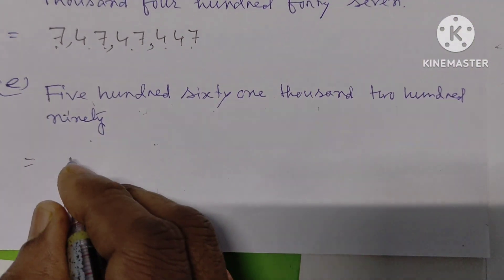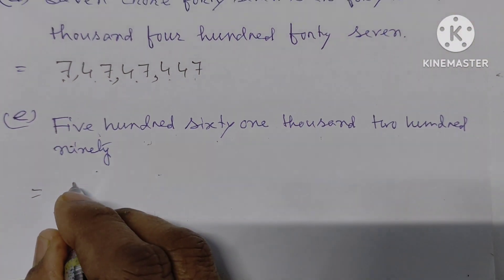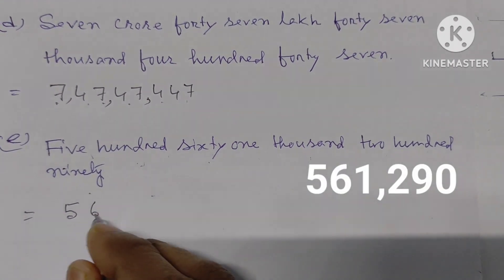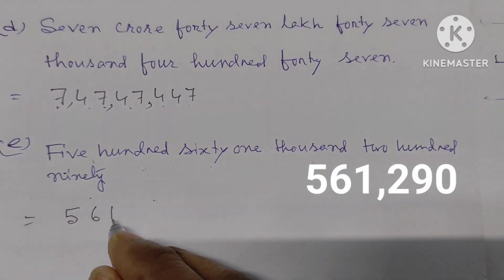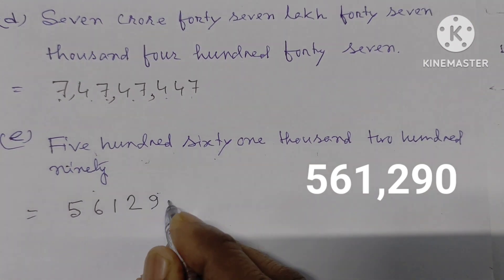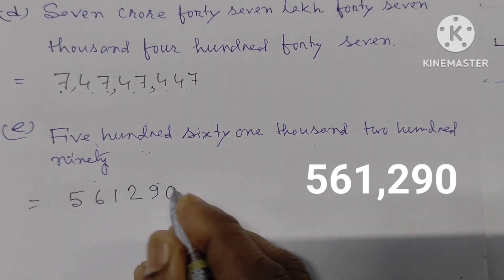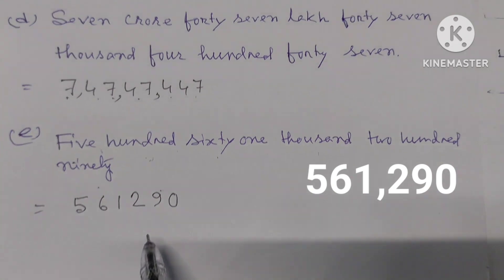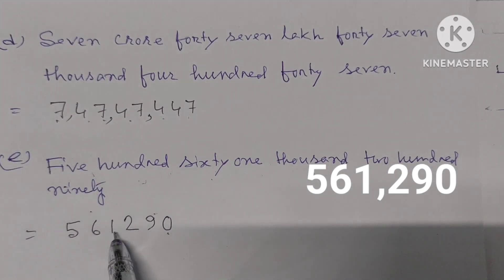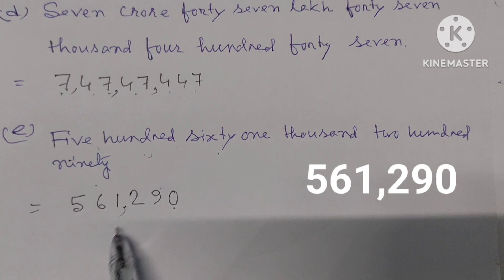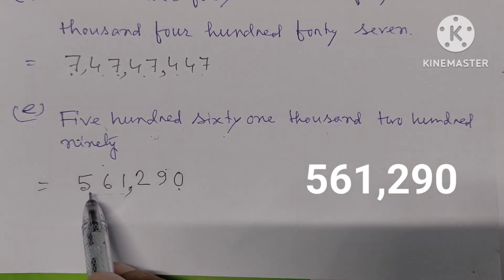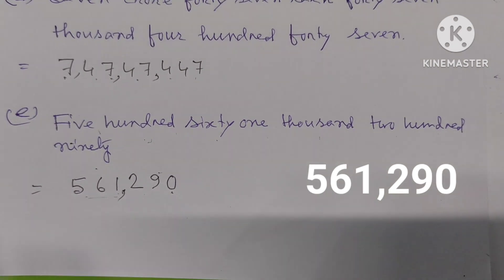We can write the answer as 561,290. In the International system of numeration, the first comma comes after three digits from the right, then every three digits.